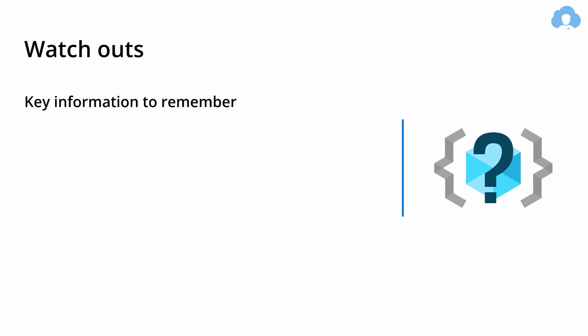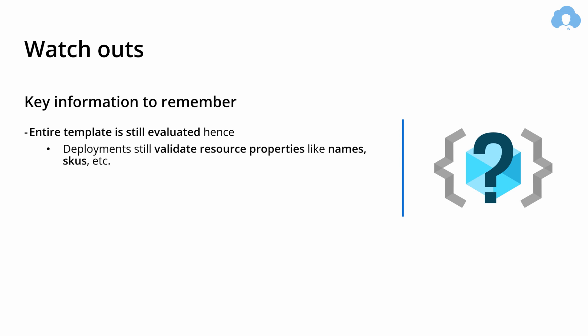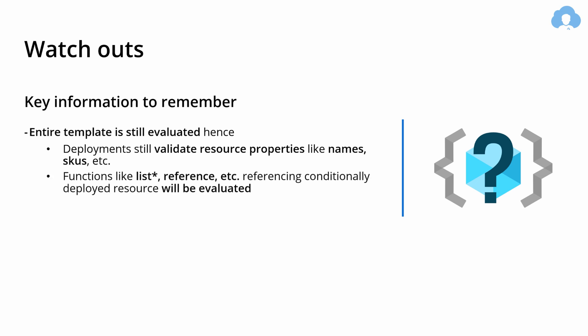What are the key watchouts when using conditional deployment? First and foremost, the entire template is still evaluated. It doesn't matter whether this resource will be deployed or skipped — resource manager will still validate all the properties for the resource like name and SKUs. So if you're going to do a conditional deployment based on an empty name, the deployment will still fail because you cannot pass an empty name to any resource in Azure. Additionally, if you're using reference functions, list functions, or any function that references a conditionally deployed resource, those functions will still be evaluated and will fail if you try to reference a non-existing resource. You should use the if function to avoid that.